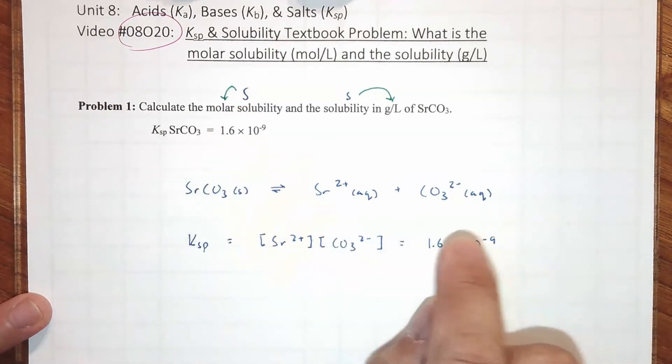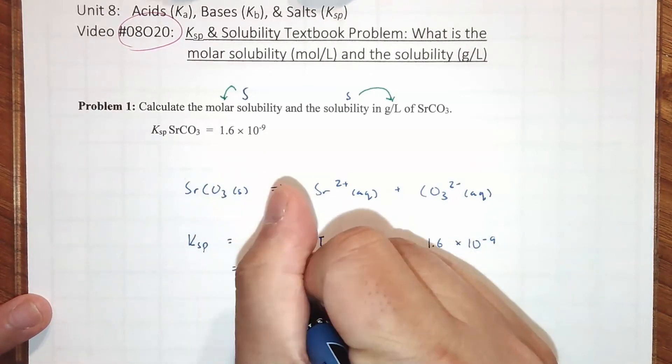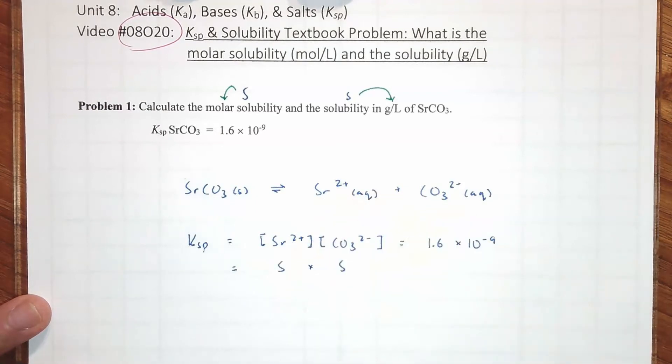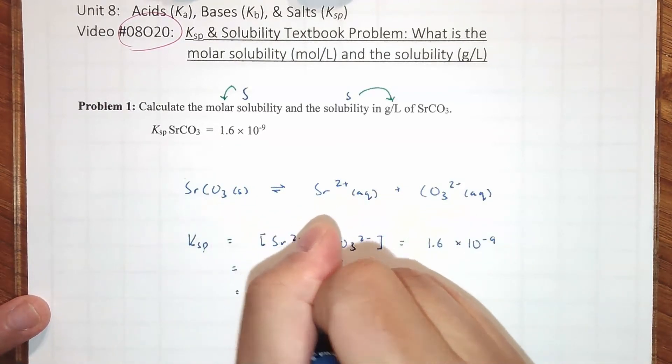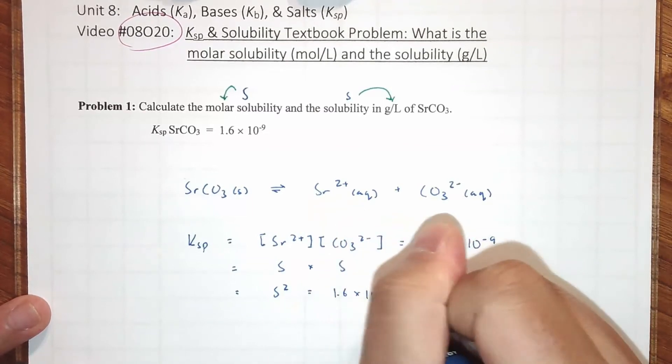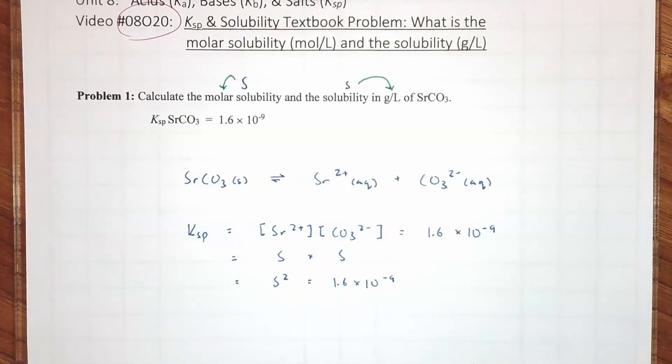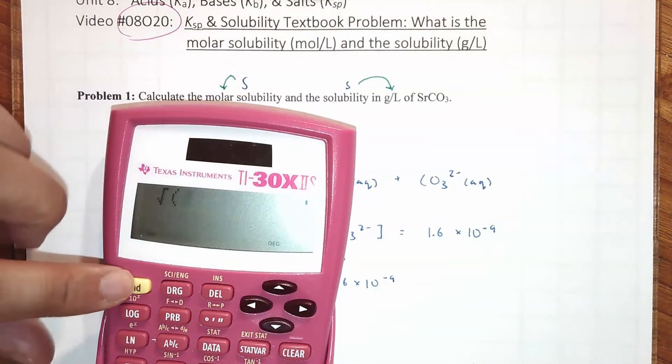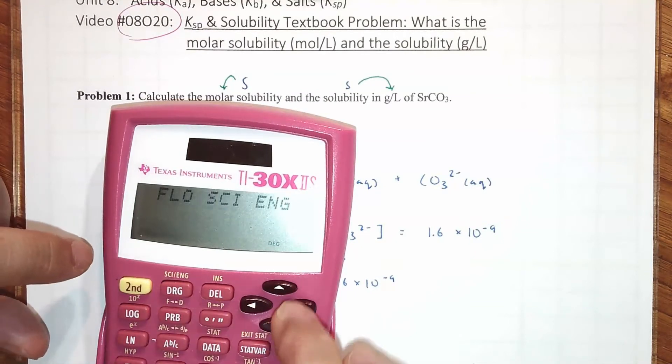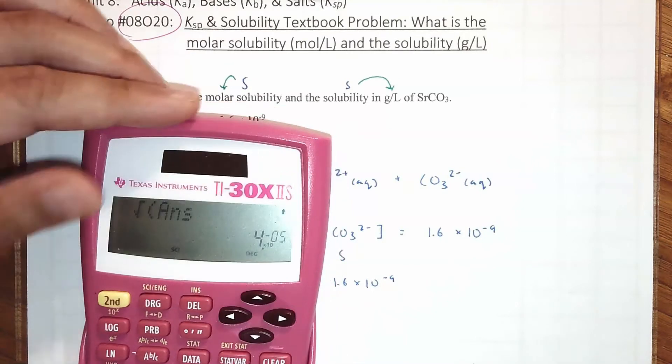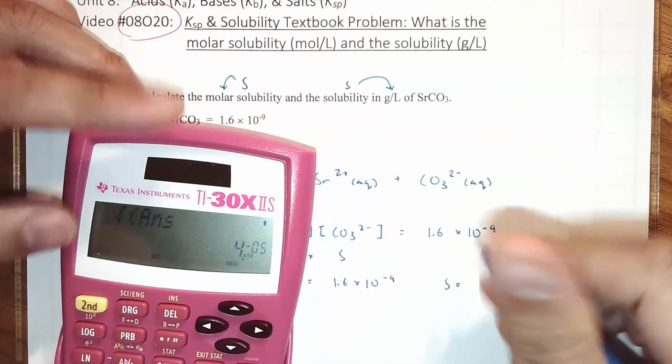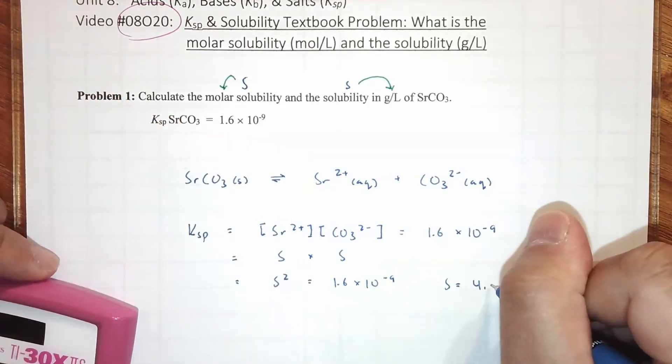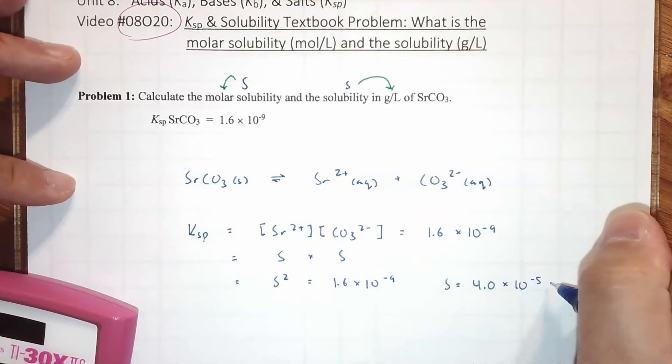So if, let's say, 10% of this dissolves, then that 10% becomes these two numbers, Sr2+ and CO3 2-. So if we have a 10 molar solution initially and 1 molar dissolves, the molar solubility is 1. And we would have 1 molar of each of these two. So do you see how the molar solubility, capital S, could also be thought of as a concentration of your ions. So I'm going to substitute for S here and here. And obviously that is S squared equals 1.6 times 10 to the -9.